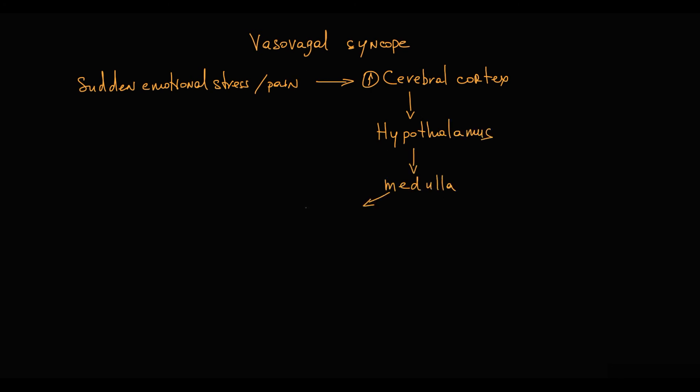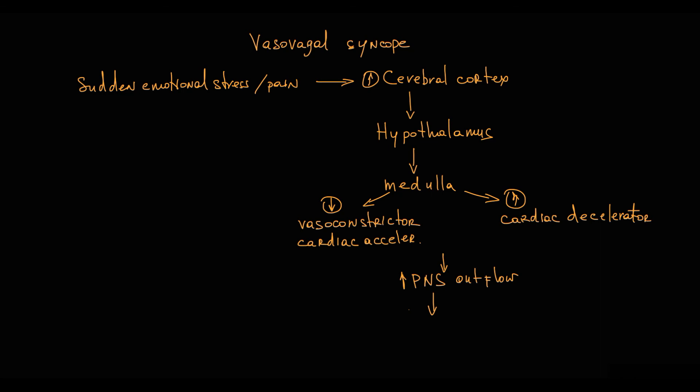That then transmits signal to hypothalamus and then to medulla, where it decreases the activity of centers that provide sympathetic nervous system outflow. So the activity of vasoconstrictor and cardiac accelerator center decreases, and increases the activity of cardiac decelerator center. That increases parasympathetic nervous system outflow, and basically this results in the same effects as the classic Bezold-Jarisch reflex.